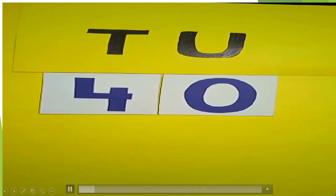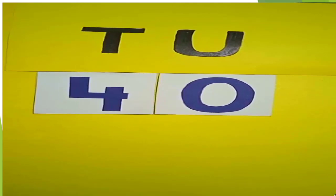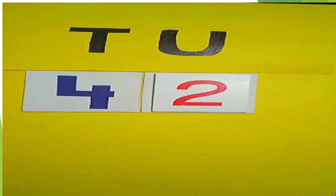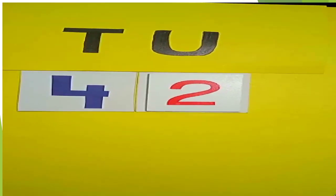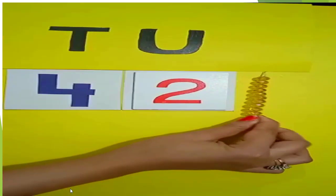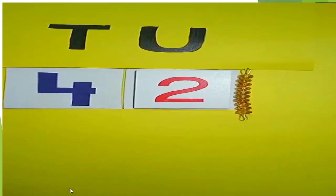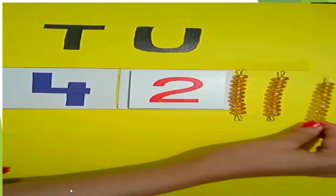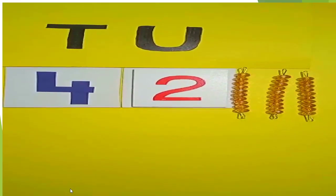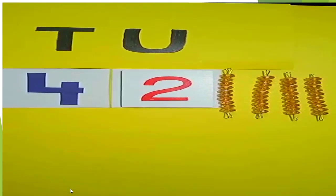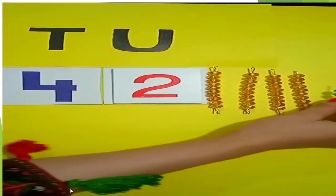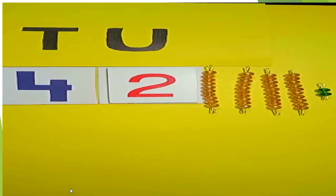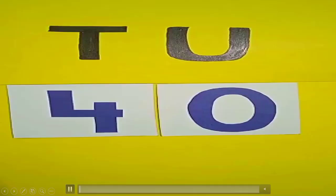If we place 2 in the unit place of 40, it makes 42. Now this is 42. 1, 2, 3, 4. 4 tens and 2. 42. In the same way, if we put number 3 in the unit place of 40, it makes 43.